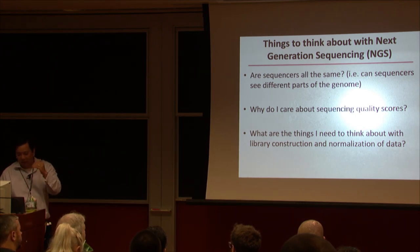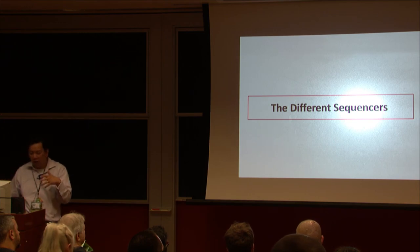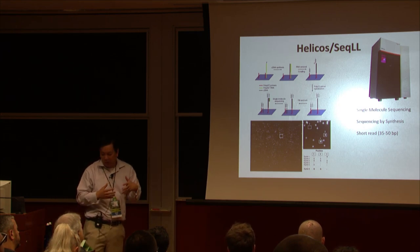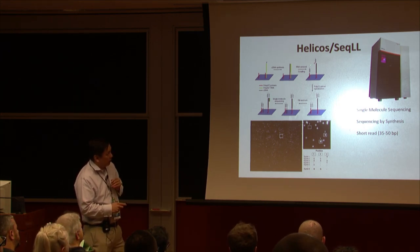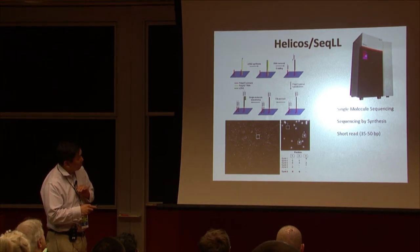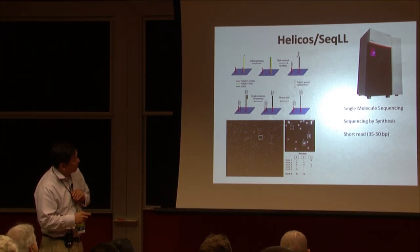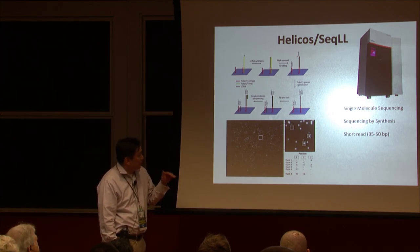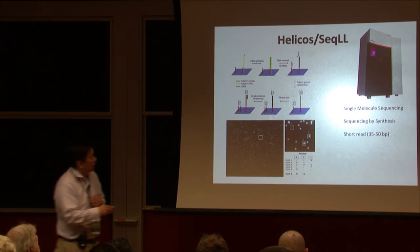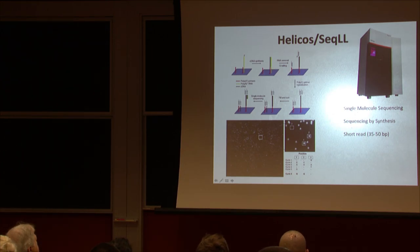I'd like to have more of an interactive discussion, so raise your hands and ask questions. There are different sequencers. This first sequencer is the Helicostar, the SQL sequencing platform - it still does exist. Basically, sequencing starts with a flow cell, which is a piece of glass or plastic. On this, there's something attached directly to the sequencing flow cell - in this case, it's a bunch of T's, or poly-T.